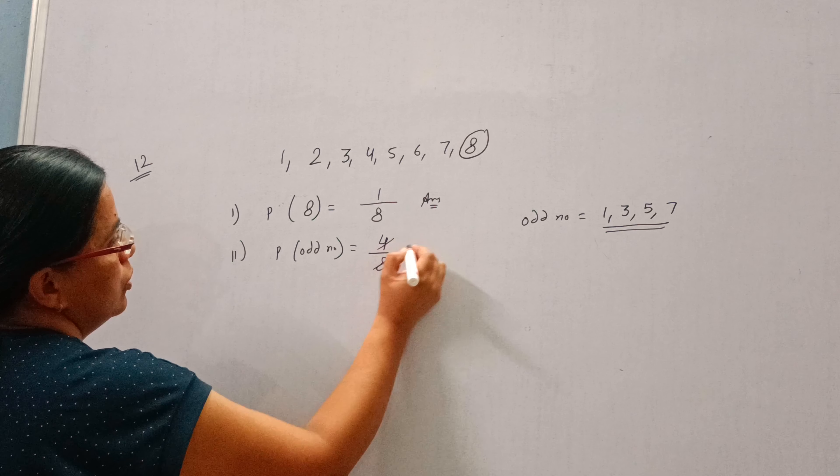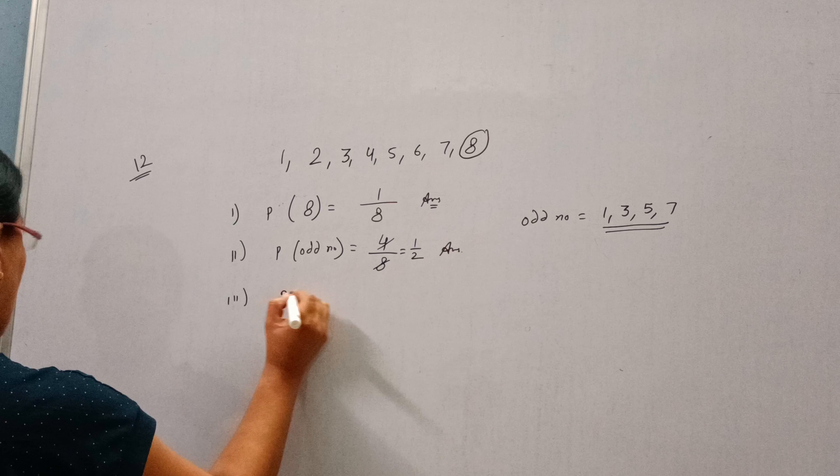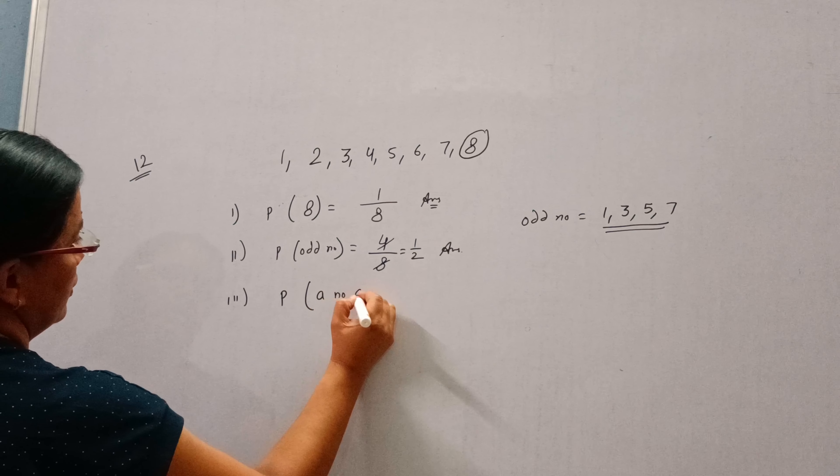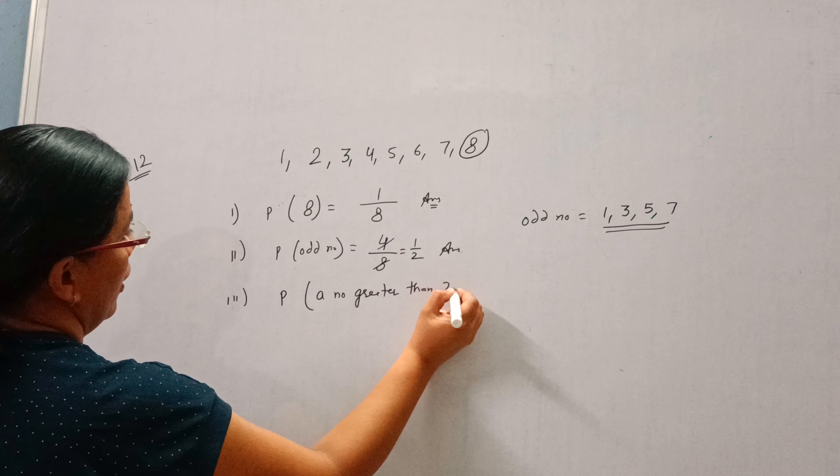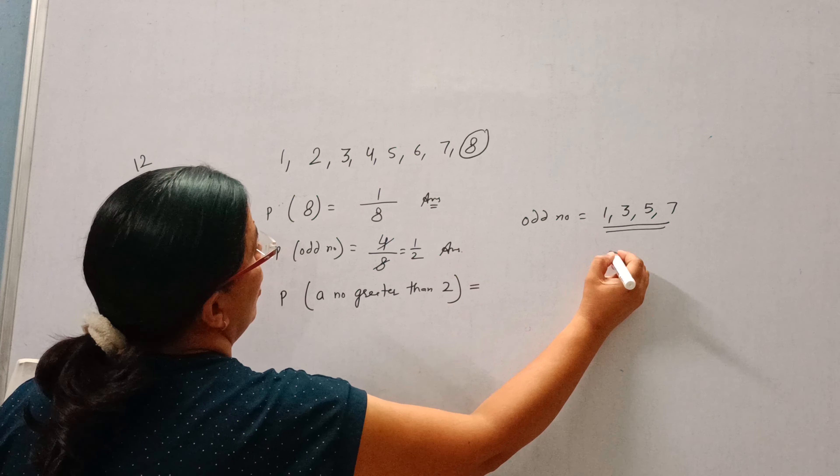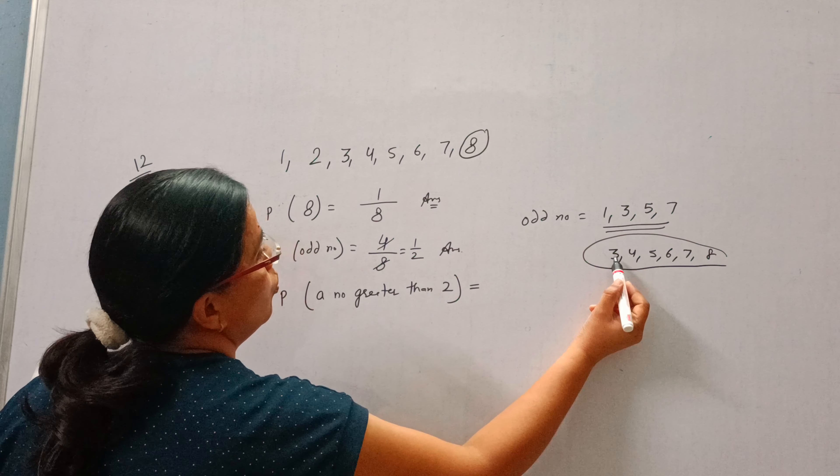Third is a number greater than 2. The numbers greater than 2 are 3, 4, 5, 6, 7, 8. So how many numbers are greater than 2?